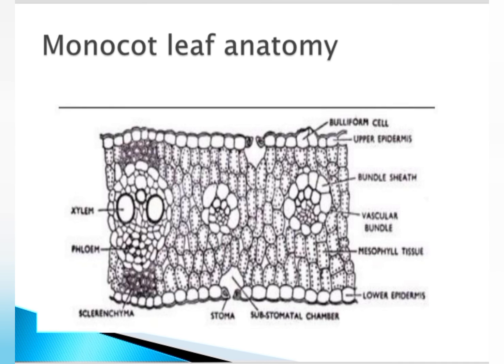Next, coming to the leaf — it is isobilateral with parallel venation, showing it is a monocot leaf. Upper and lower epidermis are present, and stomata can be seen on both epidermis layers. Specialized epidermal cells called bulliform cells are present, which help in the rolling of the leaf in the absence of water. One more important thing: mesophyll is not divided into spongy and palisade parenchyma. Vascular bundles are present in between. This is the anatomy of the leaf. Thank you for watching, please subscribe to our channel.